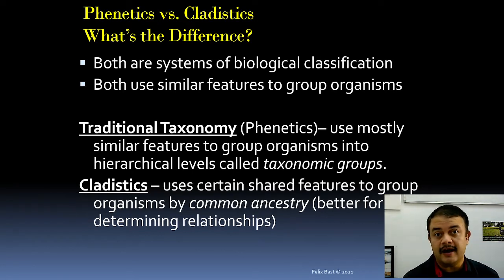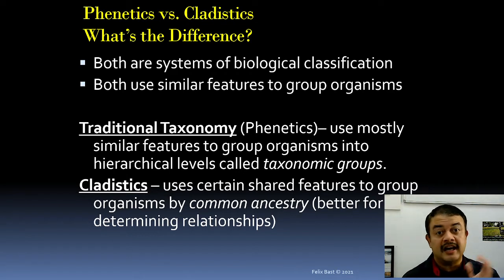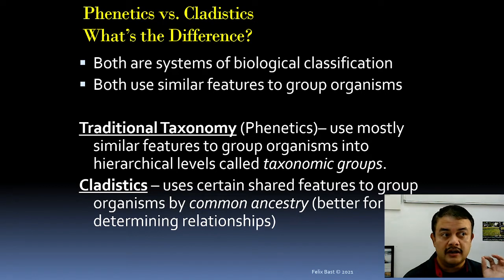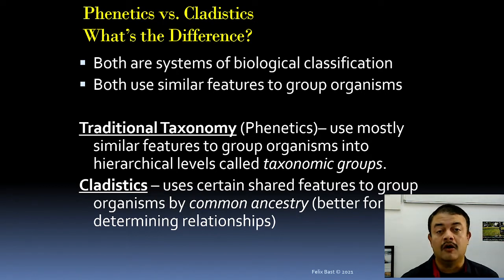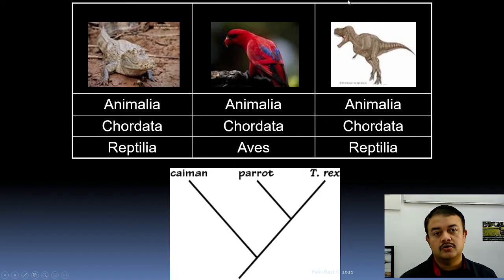A simple example of phenetic clustering: when you go to a library, books are arranged by genre based on titles — that is just gross similarity. They don't look at the ancestry of how the books evolved. That is the difference between traditional taxonomy and modern systematics.